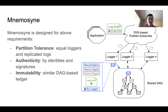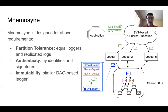Therefore, we introduce NAMMOSIGN, which is designed to satisfy the above requirements. For partition tolerance, NAMMOSIGN uses a set of equal loggers that are each able to log on their own, and all the logs are replicated to every logger. For authenticity, NAMMOSIGN uses identity for application and logger nodes, and uses signatures to ensure log authenticity.